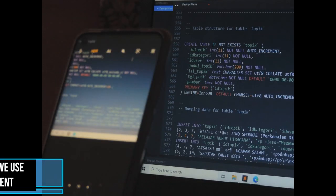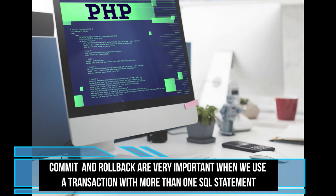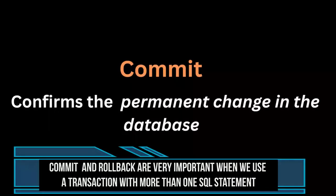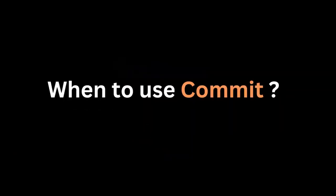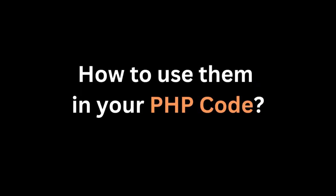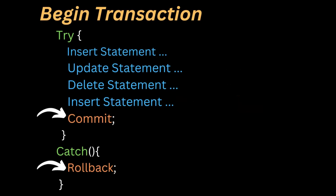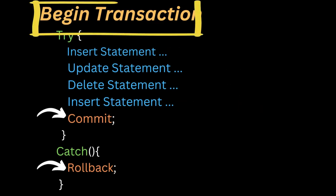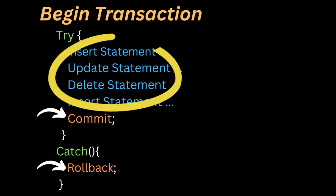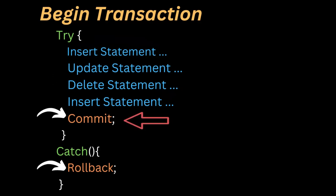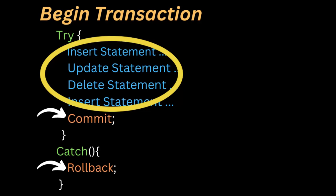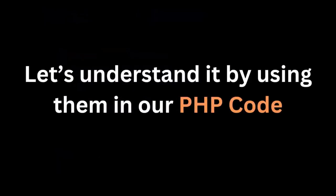Friends, commit and rollback are very important when we use a transaction with more than one SQL statement. Commit will confirm the permanent change and rollback will undo the changes in the database. In this video, we'll see when and how we need to use commit and rollback in PHP code that modifies the data in the database. A transaction consists of one or more SQL statements. If we use begin transaction, all SQL statements after this together will be considered as a single transaction until it runs commit or rollback. So either all these changes complete successfully or none of them at all.